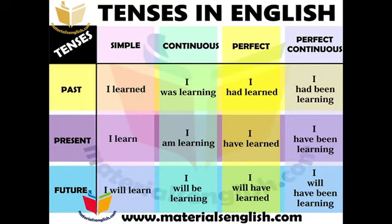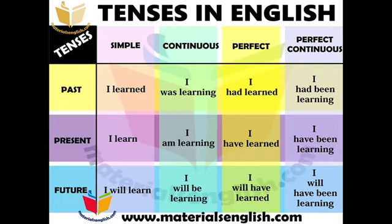I have taken one verb and will put it into all the tense forms. In the simple past tense: 'I learned.' In the past continuous: 'I was learning.' In the past perfect: 'I had learned.' In the past perfect continuous: 'I had been learning.' Moving to present: simple present is 'I learn,' present continuous is 'I am learning,' present perfect is 'I have learned,' and present perfect continuous is 'I have been learning.'